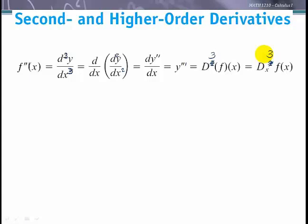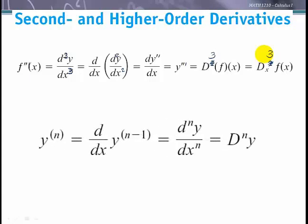We could continue for a fourth or fifth derivative, but after three primes it becomes too many, so we put the order in parentheses — this could be 4, 5, 6, or 25 — so we know it's not an exponent but a derivative. This is the nth derivative of y. In Leibniz notation, for example a fifth derivative, we put a 5 in the numerator and a 5 in the denominator, or with differential operator notation we put a 5 there.